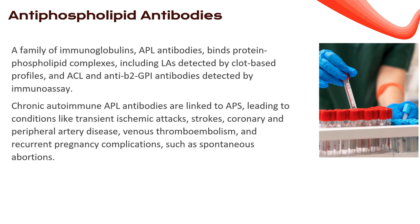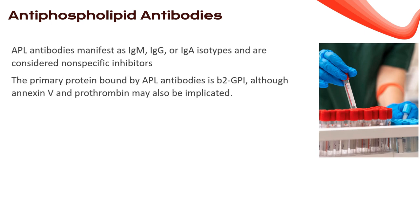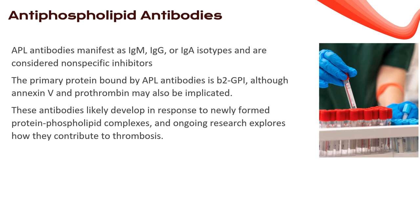Antiphospholipid antibodies (APL) are immunoglobulins that bind protein-phospholipid complexes. LAs, ACL, and anti-B2-GPI antibodies are detected through clot-based profiles and immunoassays. Chronic autoimmune APL antibodies often lead to antiphospholipid syndrome (APS), orchestrating conditions such as transient ischemic attacks, strokes, artery diseases, venous thromboembolism, and recurrent pregnancy complications like spontaneous abortions. APL antibodies come armed with IgM, IgG, or IgA isotypes. Surprisingly, they don't directly bind phospholipids but target the proteins assembling on those phospholipid surfaces — primarily B2-GPI, with annexin V and prothrombin also in the lineup.